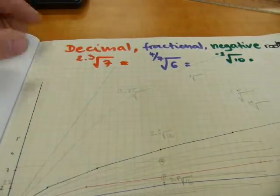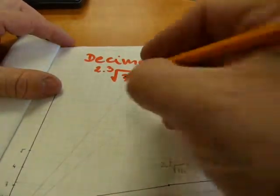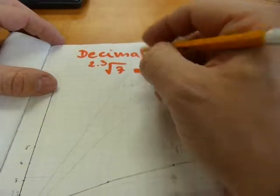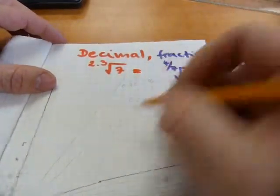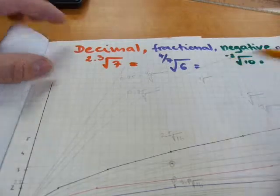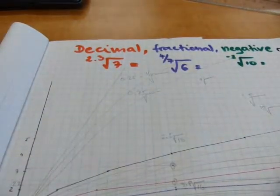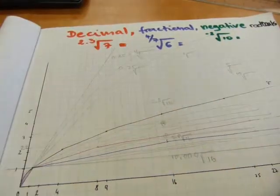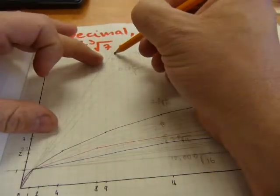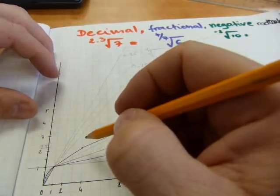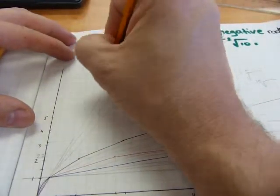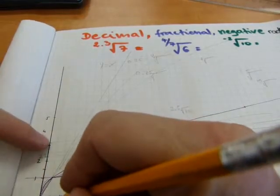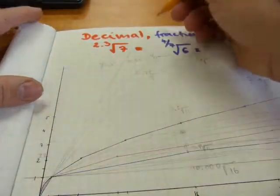Just eyeballing it, somewhere there. The 0.25th root, or a quarter root, is very nearly a straight line, but it's going somewhere there. You get the idea. And all of these curves exist between this straight line, which is just y equals x, 1 at 1, 2 at 2, 3 at 3, 4 at 4. It's just a straight line.